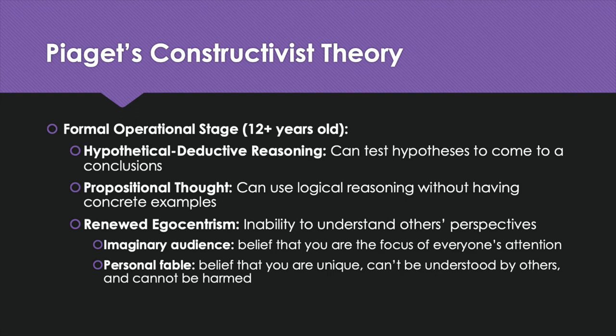The formal operational stage is from ages twelve and up, although not everyone reaches this stage. It's characterized by hypothetical deductive reasoning — the ability to test hypotheses to reach a conclusion — and propositional thought, the ability to reason logically even without concrete examples. Unfortunately, adolescents in this stage experience a renewed egocentrism. Elkind proposed this happens due to two things: the imaginary audience, the belief that they are the focus of everyone's attention; and the personal fable, the belief that they are unique, can't be understood by others, and are somewhat invincible.